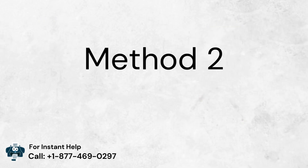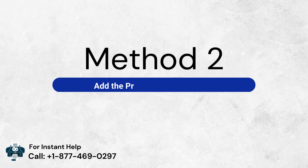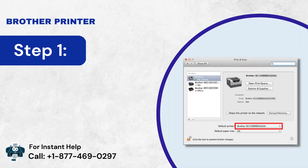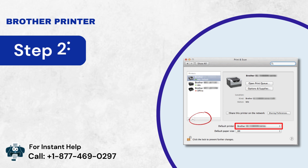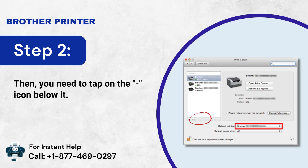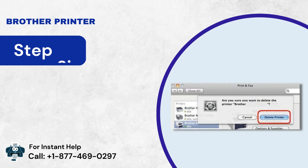Method 2: Add the printer via CUPS driver. Step 1: First, navigate to the Printers section. Step 2: Then, you need to tap on the icon below it. Step 3: Thereafter, select Delete to remove your model.